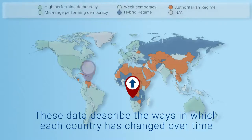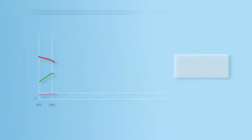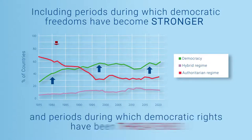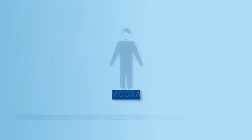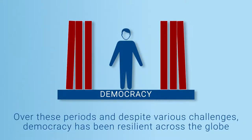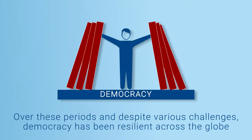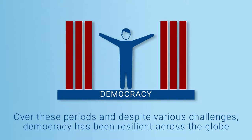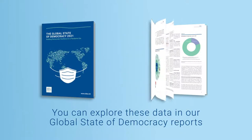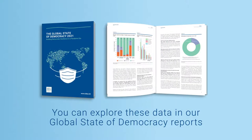These data enable us to describe the ways in which each country has changed over time, including periods during which democratic freedoms have become stronger, and periods during which democratic rights have been threatened. Over these periods, and despite various challenges, we see that democracy has been resilient across the globe.